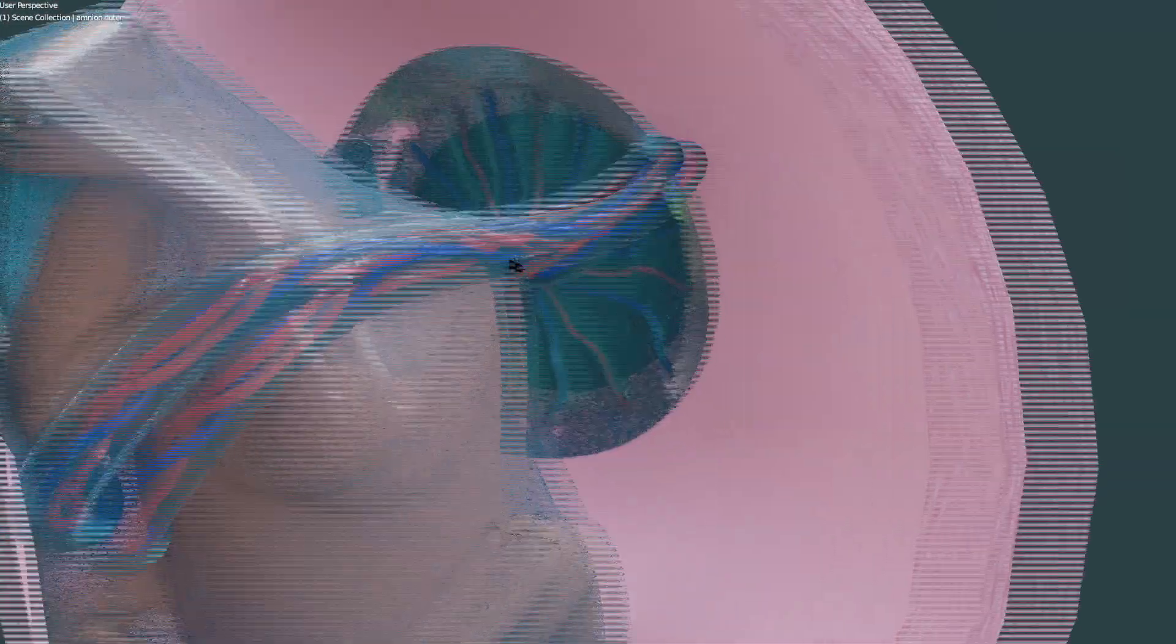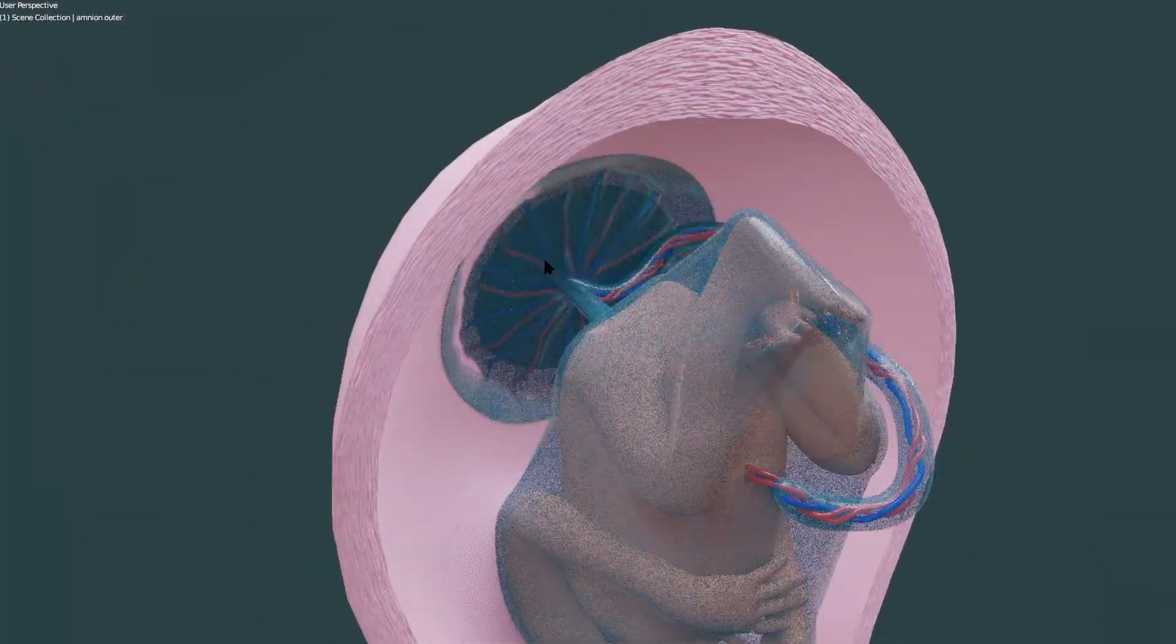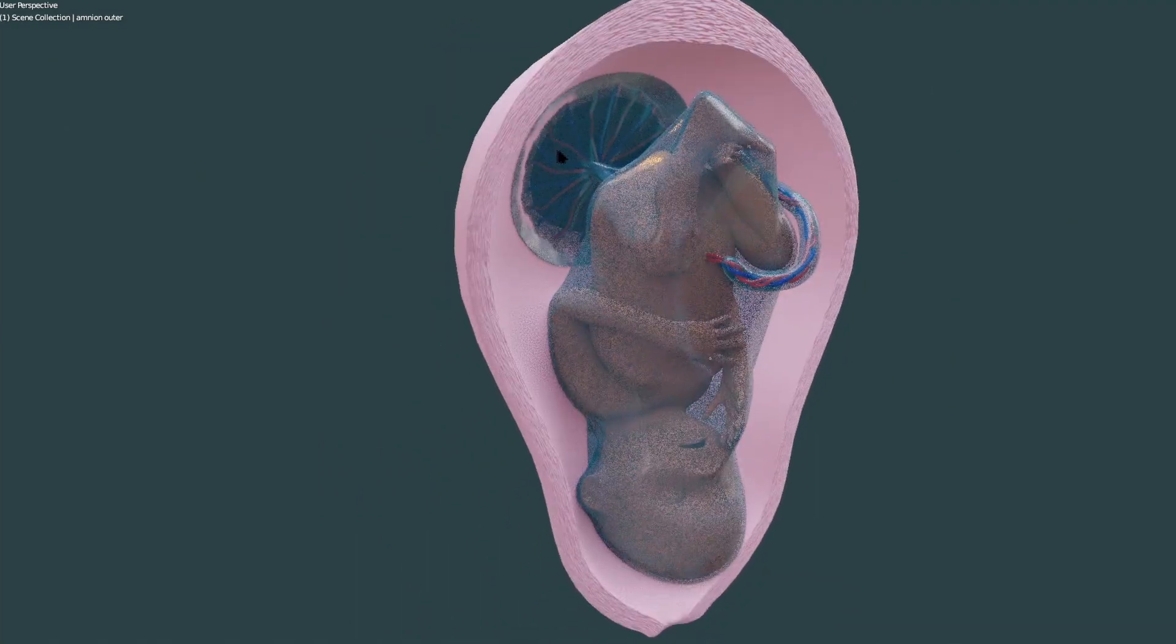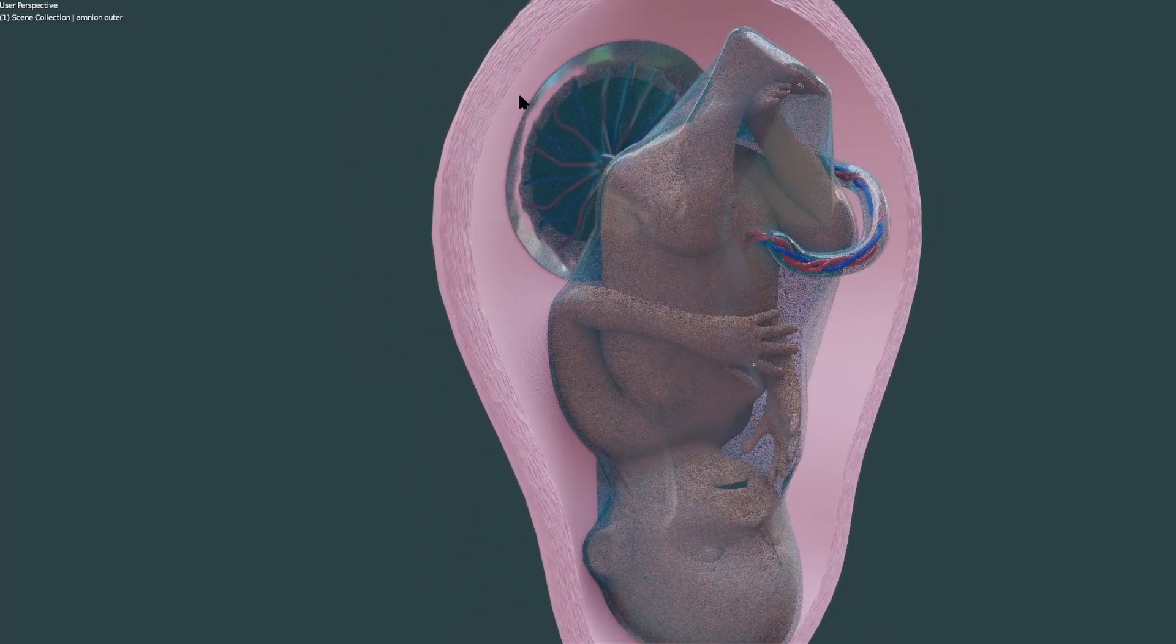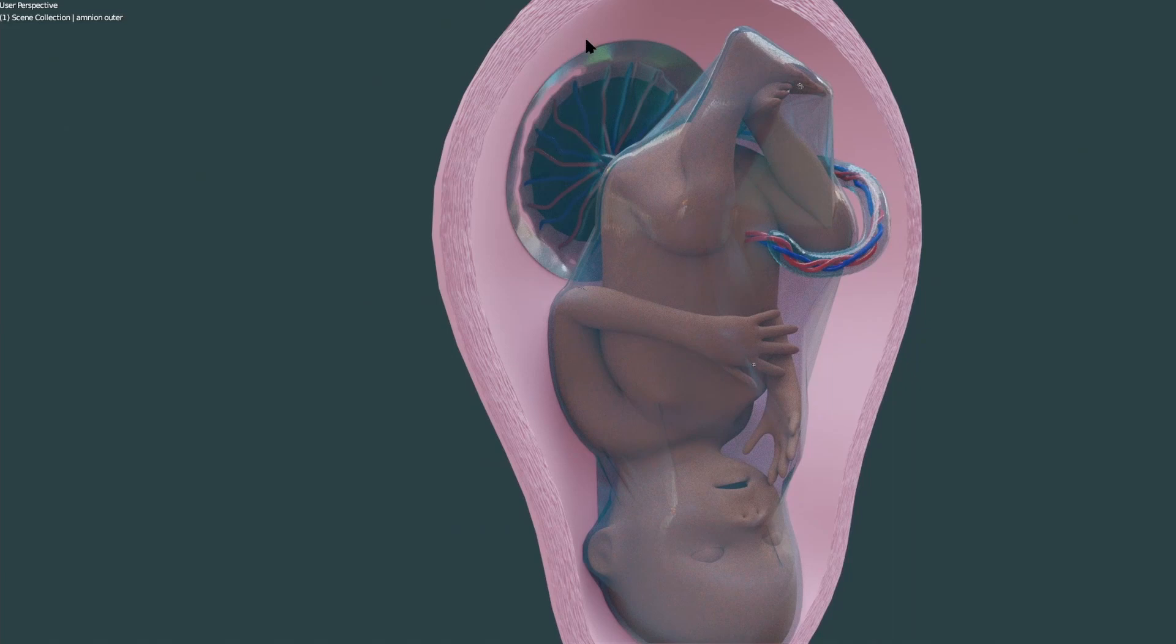What is the location of placenta? The normal location of placenta is the upper part of side of uterus, right or left side, or in the upper part of uterus posterior wall or anterior wall.